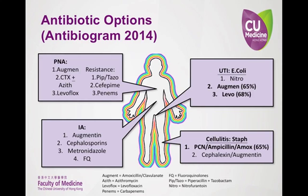Here are two examples of how following IMPACT guideline selection would not be appropriate. The IMPACT guidelines recommend Augmentin and levofloxacin as options for a UTI; however, sensitivity rates from the Prince of Wales Hospital antibiogram show sensitivity rates of only 65% and 68% for these agents against E. coli, the most common pathogen. Similarly, sensitivity rates for ampicillin or amoxicillin for one of the most common pathogens in cellulitis are below the recommended threshold of 80%, at only 65%. Therefore, following the IMPACT guidelines for a UTI or cellulitis case would be expected to lead to therapy failure in about one in every three patients at Prince of Wales Hospital.